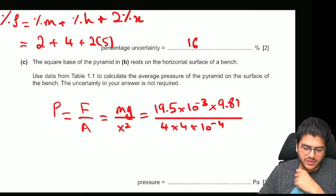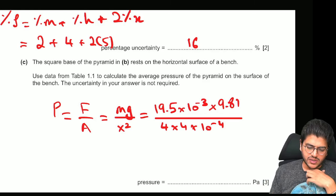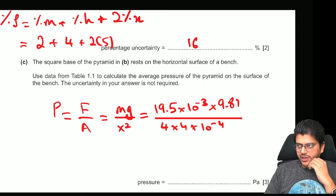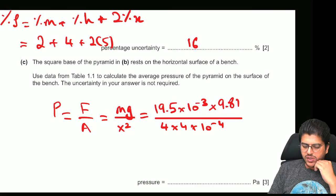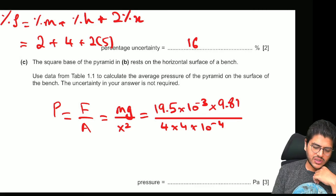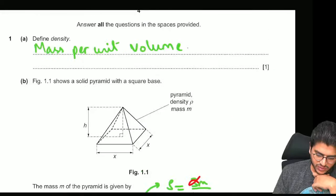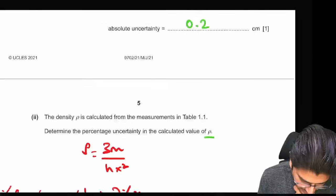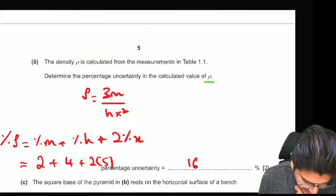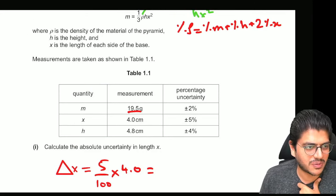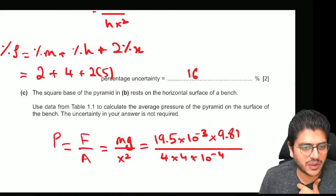The square base of the pyramid rests on a horizontal surface. You have to calculate the pressure. Pressure is force over area, as you know. The force is the weight. So the mass was 19.5 grams. The mass is 19.5 grams. So 19.5 into 10 to the minus 3 times 9.81 divided by X square.